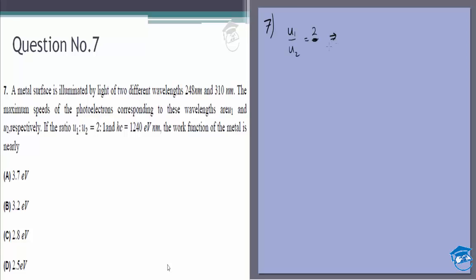The maximum kinetic energy will be proportional to U squared. That means we can say K1 by K2, which is the maximum kinetic energy, is equal to 4. But we know that the kinetic energy maximum by photoelectric effect is equal to hc by lambda minus the work function.